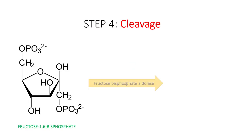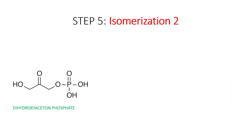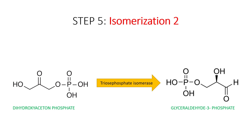After that, fructose bisphosphate aldolase catalyzes a reaction in which fructose-1,6-bisphosphate is cleaved into glyceraldehyde-3-phosphate and dihydroxyacetone phosphate. This reaction is crucial because from one 6-carbon molecule we now get two 3-carbon molecules. Since further reactions of glycolysis require only glyceraldehyde-3-phosphate, the enzyme triose phosphate isomerase converts dihydroxyacetone phosphate into glyceraldehyde-3-phosphate, leaving us with two glyceraldehyde-3-phosphate molecules.